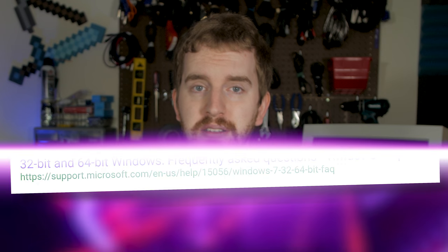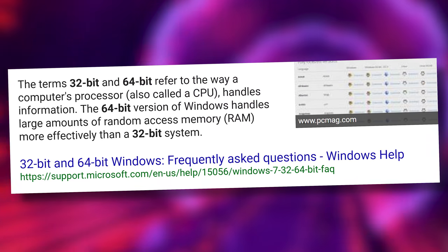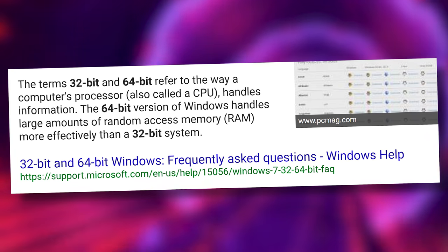This question really only applies to Windows in terms of the OBS installation. Windows comes in both 32-bit and 64-bit versions, though any modern computer from the last 5 years or so is running 64-bit only. These terms — 32-bit and 64-bit — refer to the way the computer's processor, or CPU, handles information.